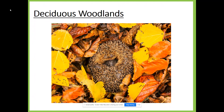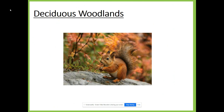Animals that hibernate include hedgehogs, dormice, bats, adders, frogs, toads, wasps, moths, and snails — so many animals in the deciduous woodland use this adaptation. The final adaptation to mention is food storage. There is very little food available in deciduous woodlands throughout winter, so some animals store food to help them through those more barren months. Here you can see a red squirrel — red squirrels create piles of nuts on the forest floor, while grey squirrels bury their nuts to hide them.